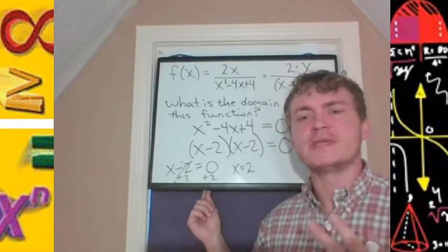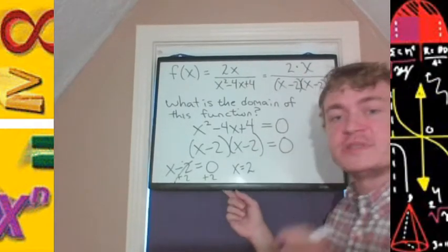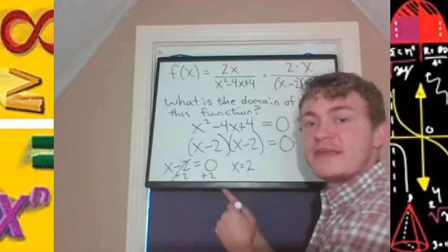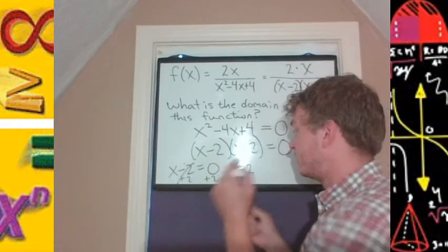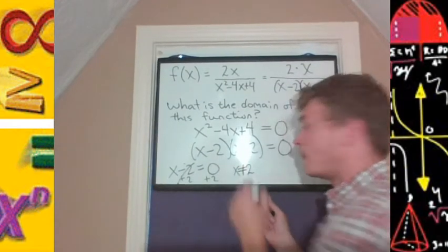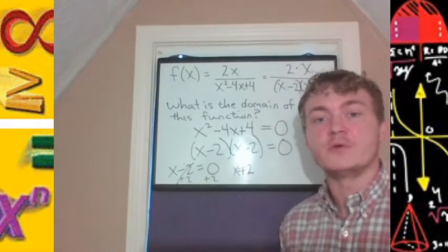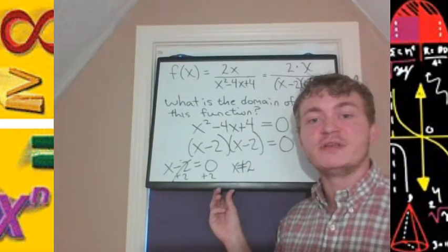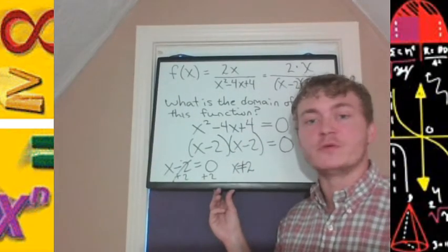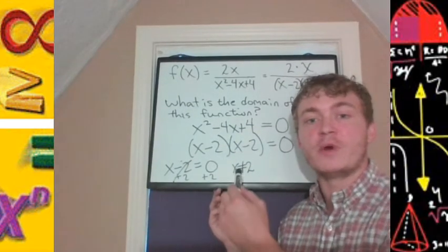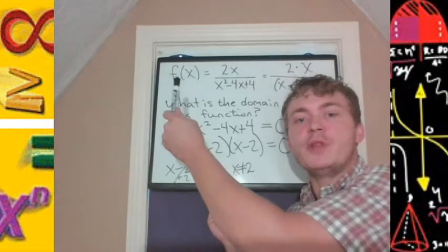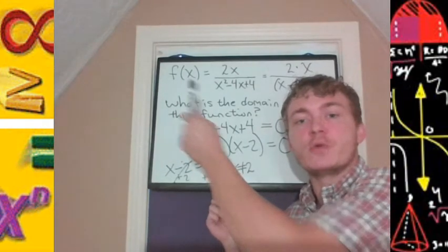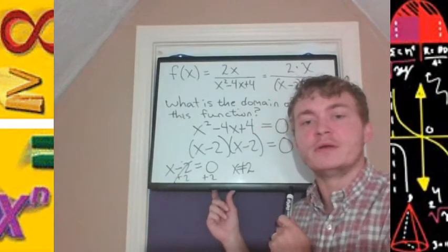The solution x equals 2 tells us the domain is not x equals 2 — the domain is every other number in existence except for 2. So we say x cannot equal 2. If you plug in 2 to this function, you will get 0 in the denominator.